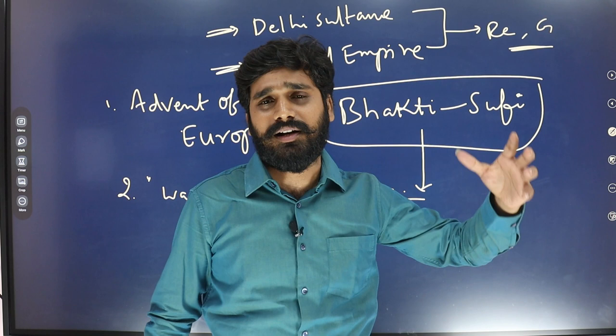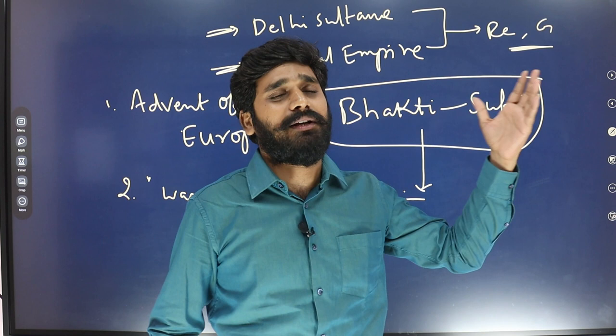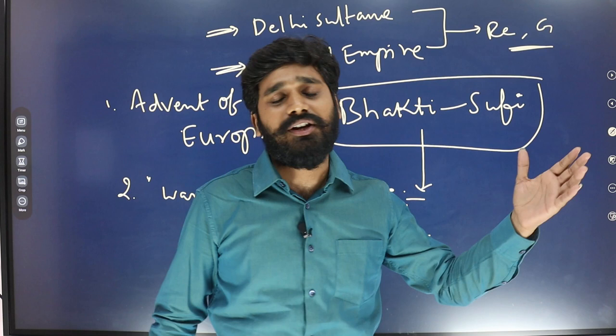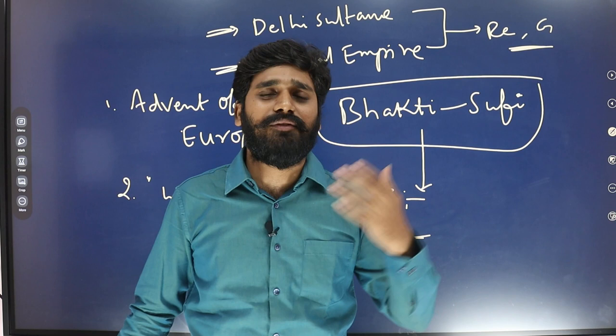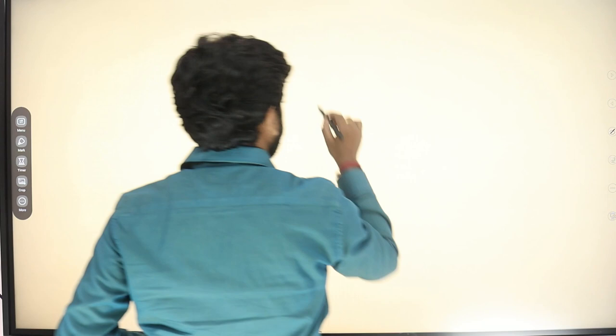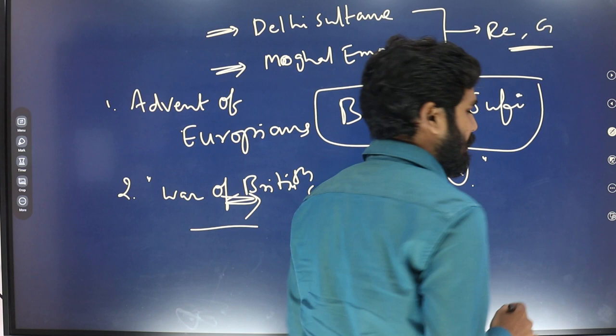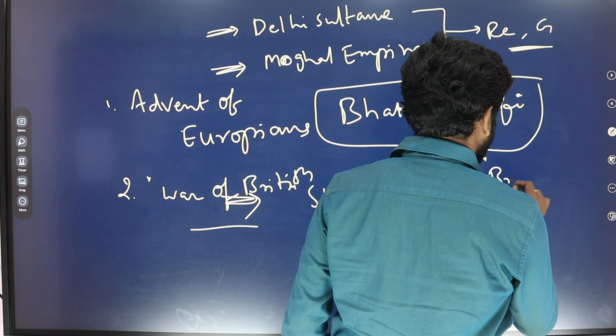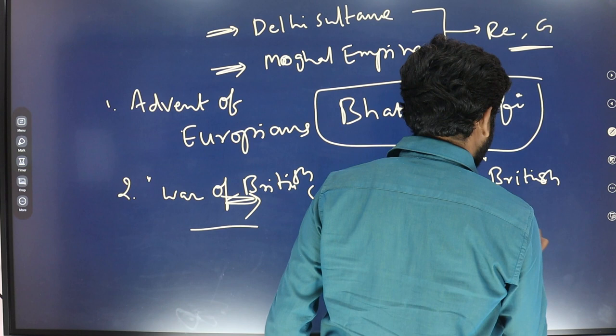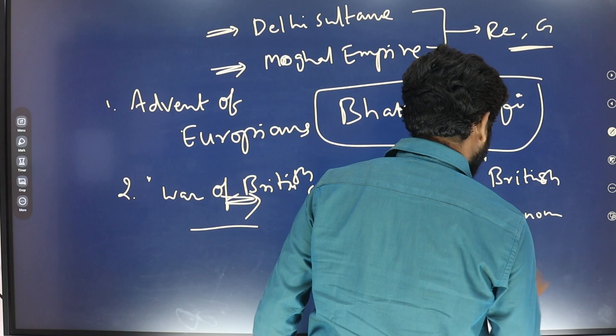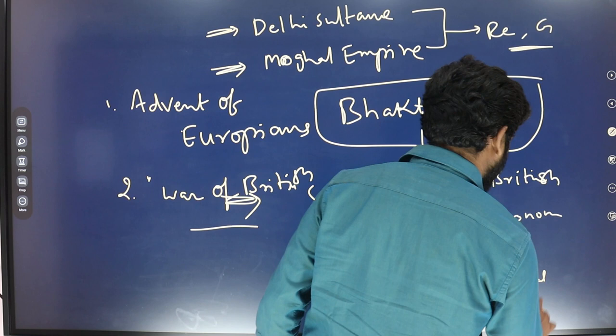After these wars, we will discuss how the Britishers ruled through the East India Company, followed by the Regulation Acts and the Charter Acts. We will cover the British rule's economic system, governance, social conditions, and religious conditions during the British period.